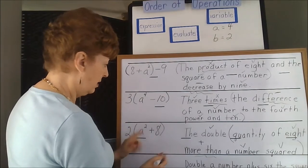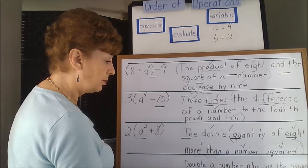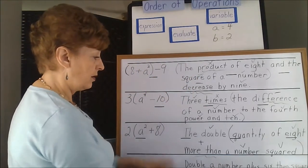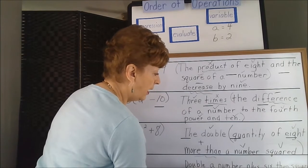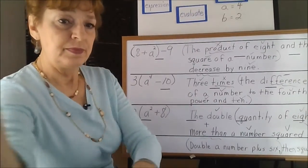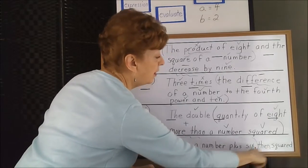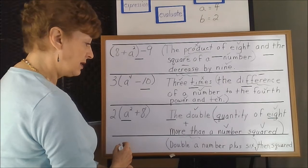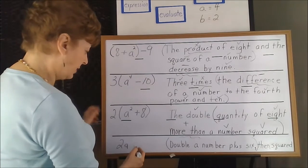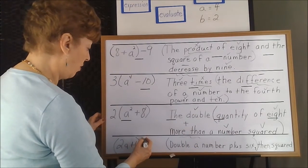The doubled quantity of 8 more than a number squared. Last one: double a number plus 6 — do you see the comma? — then, squared. So within this portion, it says double a number plus 6. The comma tells us that those two ideas are grouped. Here's the comma — double a number plus 6, then squared — so we're going to have to do doubled a number. We don't know what the number is, let's call it a, plus 6. That is a quantity, then squared — the whole thing gets squared.